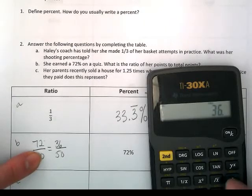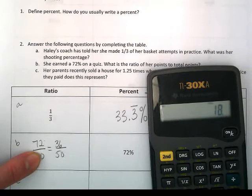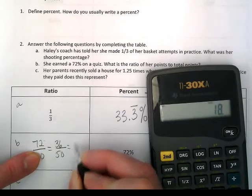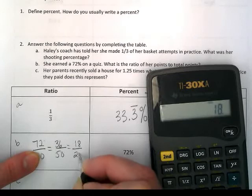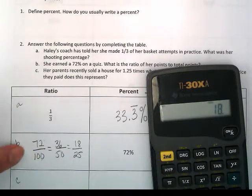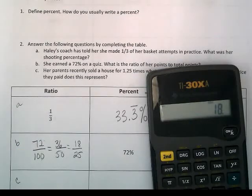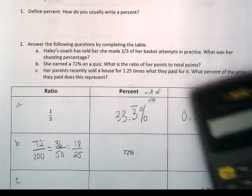Those are still even. It looks like I can divide again. I'm going to try dividing by 2 again. 36 divided by 2 is 18. 50 divided by 2 is 25. All three of these fractions show her percent as a fraction. They're all equivalent fractions.